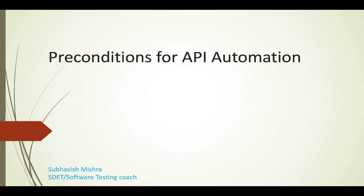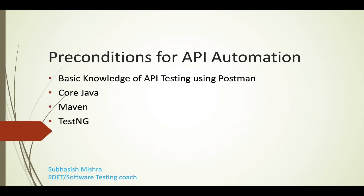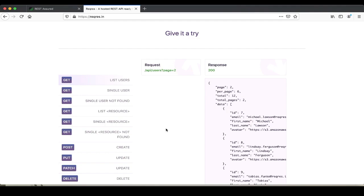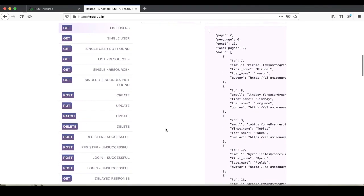Before starting API automation, there are a few preconditions. You should have basic knowledge of API testing using Postman — you can refer to my previous videos Part 1 and Part 2. You should have basic knowledge of Java, then Maven, and TestNG. Here is the website requestresponse.in, which I have explained in my previous videos: how to make a GET call, how to make a POST call, and how to make a PUT and DELETE call.